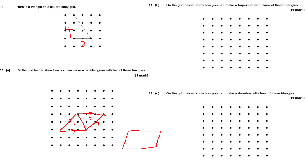For part B: show how you can make a trapezium with three of these triangles. A trapezium looks something like this, so we're aiming for something that looks like this.